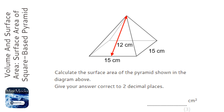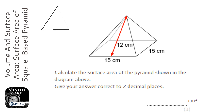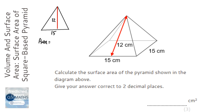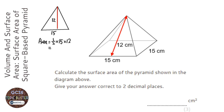Looking at those triangles — if I draw one, the height of the triangle is going to be 12 and the base is 15. So the area of each triangle is half times base times height, which is 0.5 times 15 times 12, which equals 90. There are four of them, so we'll need to multiply that by four.